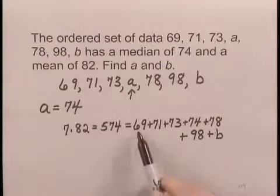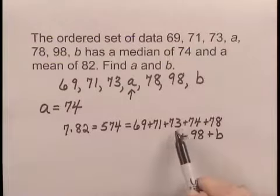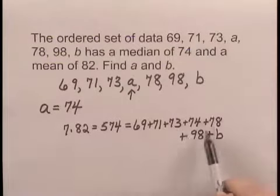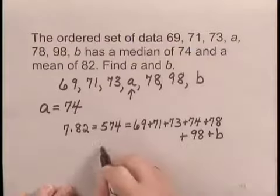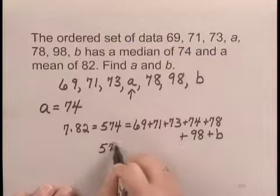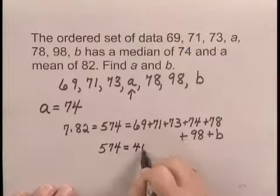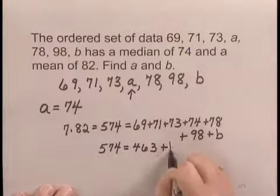Now if we add 69 plus 71 plus 73 plus 74 plus 78 plus 98, we get 463. So I have that 574 equals 463 plus b.